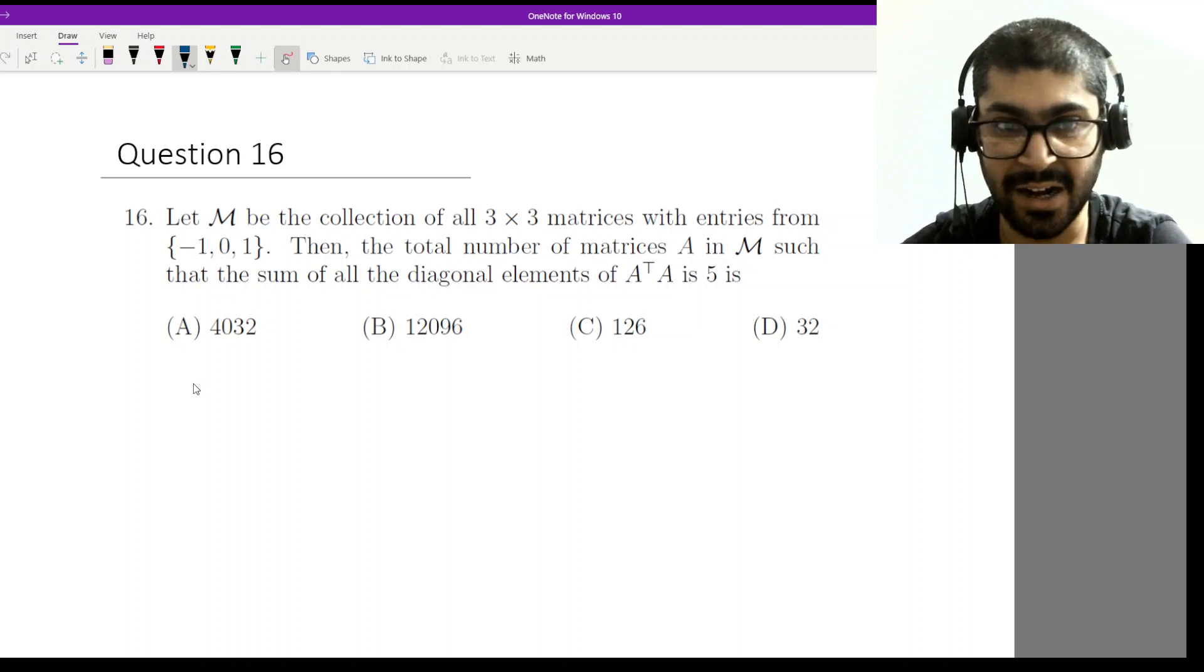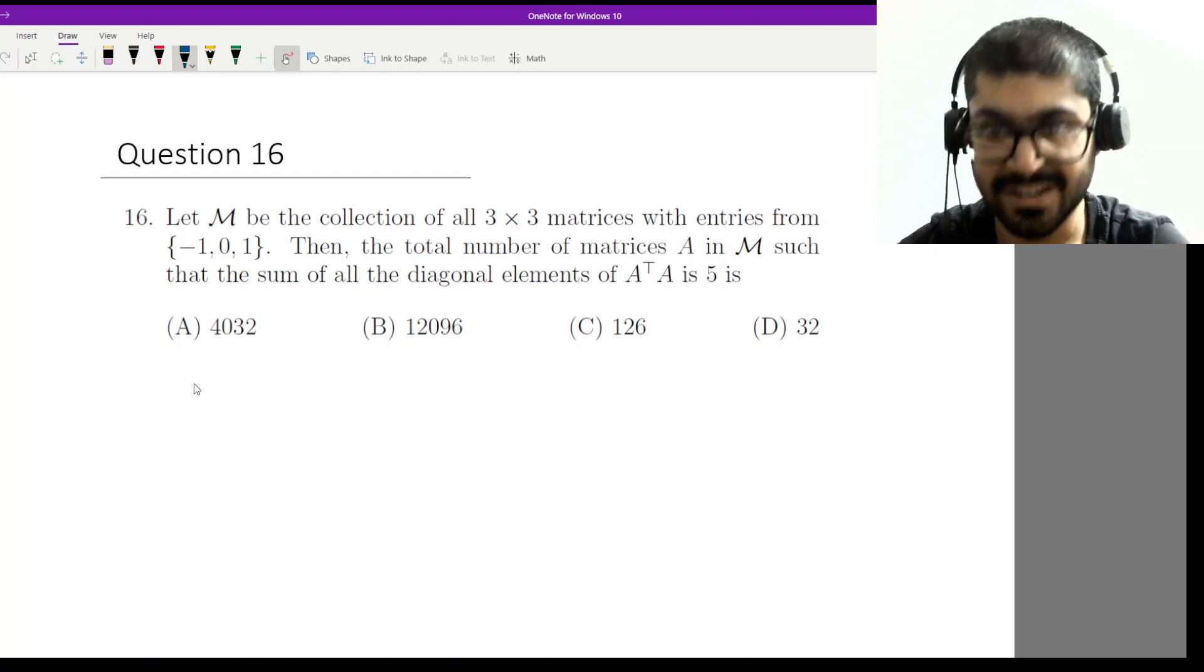What is given here: Let M be the collection of all 3×3 matrices with entries from {-1, 0, 1}. Then, the total number of matrices A in M such that the sum of all diagonal elements of A^T A is 5.